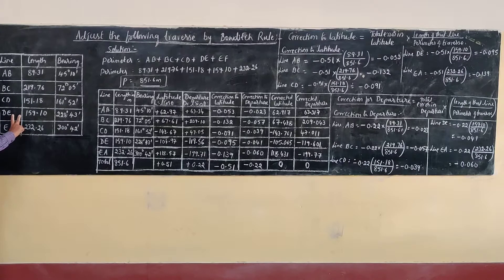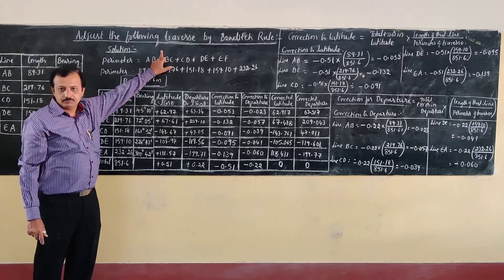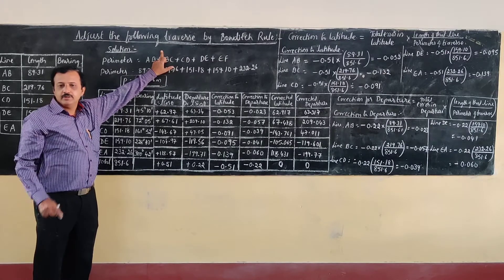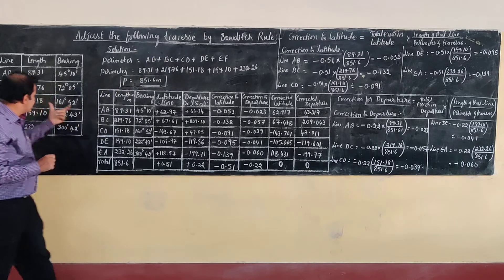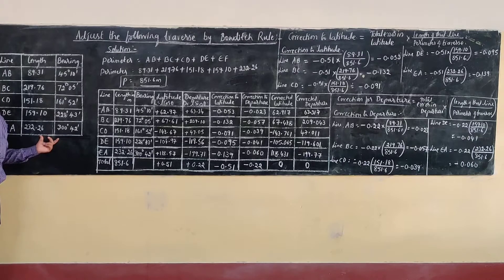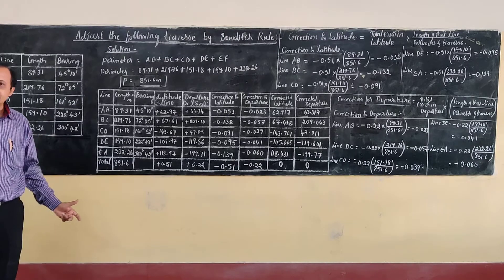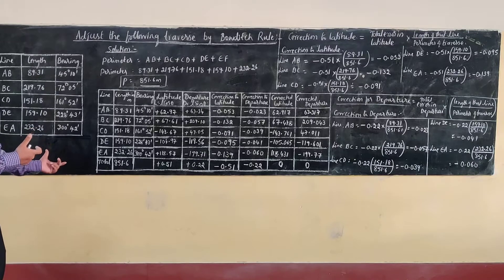We have to adjust the traverse by the Bowditch method. Why is this adjustment required? Whenever you plot this traverse on a sheet, it cannot close — there will be some closing error. To eliminate that closing error, we have to adjust the traverse.